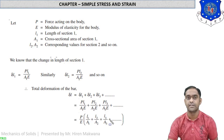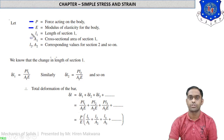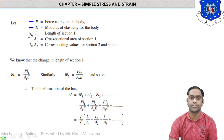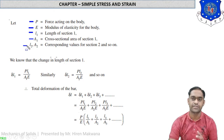Let us see how the calculation and derivation of the formula works. P is the force acting on the body. E is the modulus of elasticity for the body. L1 is the length of section 1, A1 is the cross-section area of section 1, and L2, A2 are the corresponding values of section 2, and so on for the third, fourth, and fifth sections.